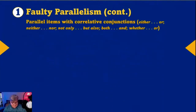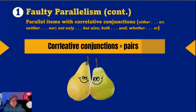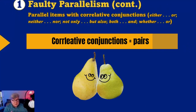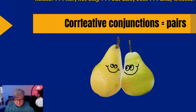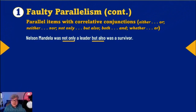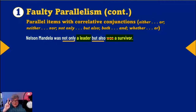Let's continue with faulty parallelism. These have to do with the correlative conjunctions, which set up pairs: either blank or blank, neither blank nor blank. The two blanks must be exactly equal — what is to the right of the first conjunction has to be exactly the same as what is to the right of the second conjunction. For example: Nelson Mandela was not only a leader — a noun — but also was a survivor — a phrase. We need another noun there, so we get rid of 'was': not only a leader, but also a survivor. They have to be exactly equal.